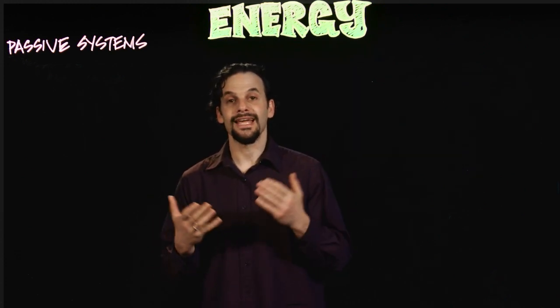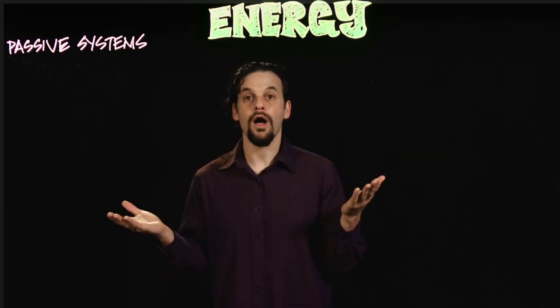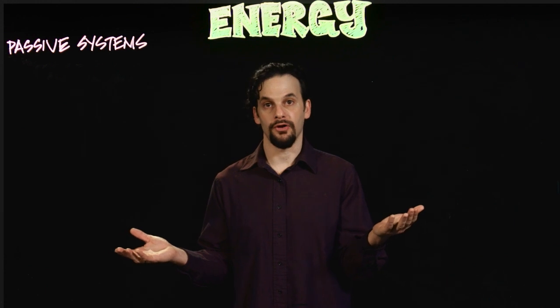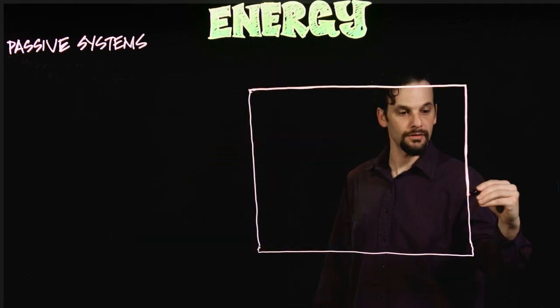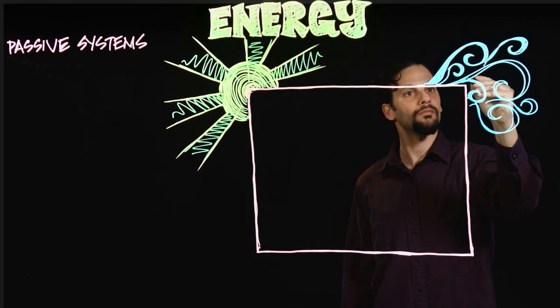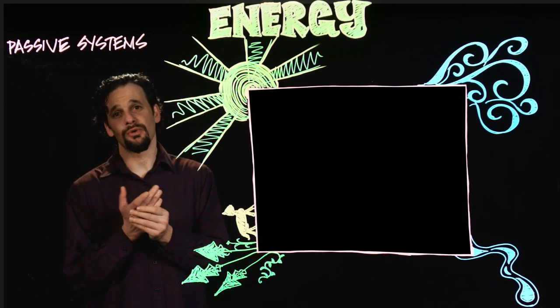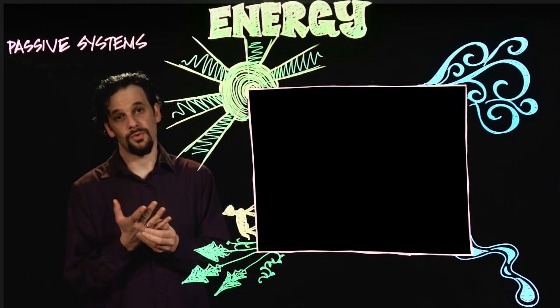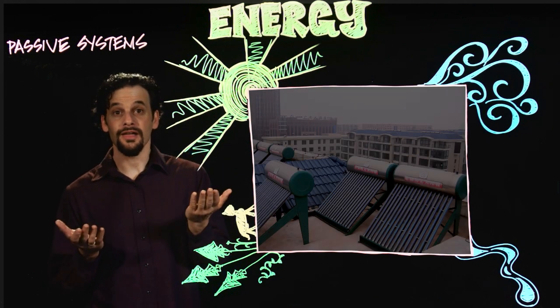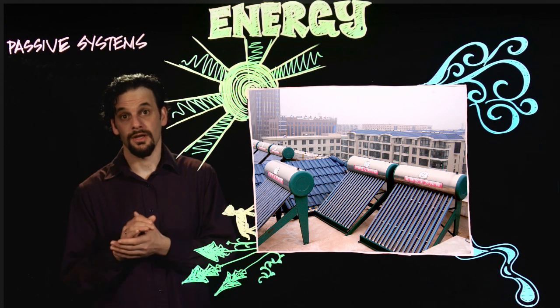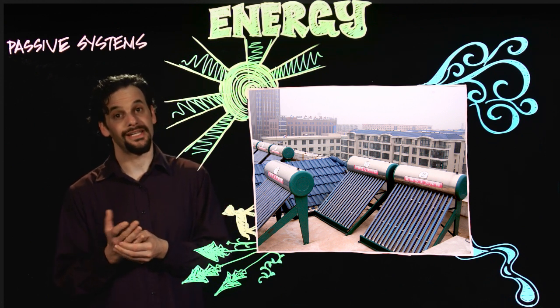The first thing to do is identify what renewable resources are in abundance in your area. The main ones are sun, wind, flowing water, and biomass. Some special places have geothermal energy available, but that's quite uncommon. The sun can provide both solar electricity through solar panels, as well as easy water heating.